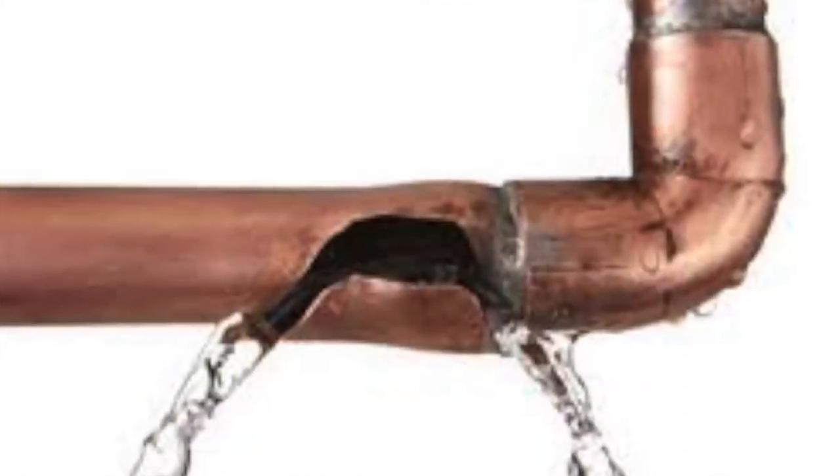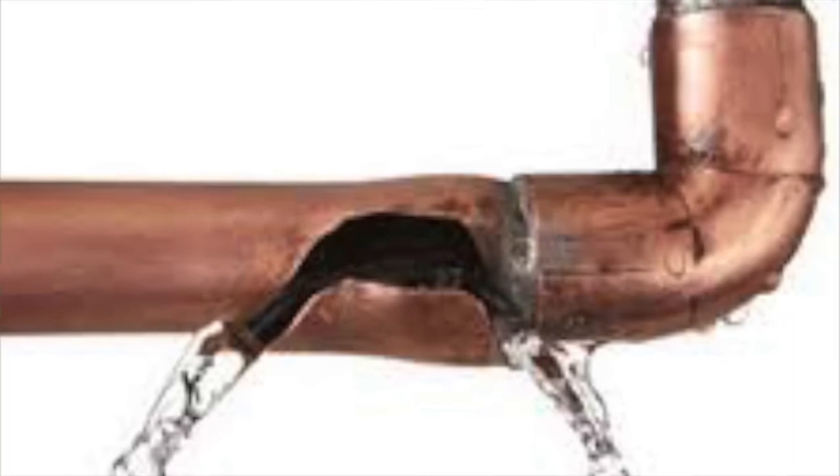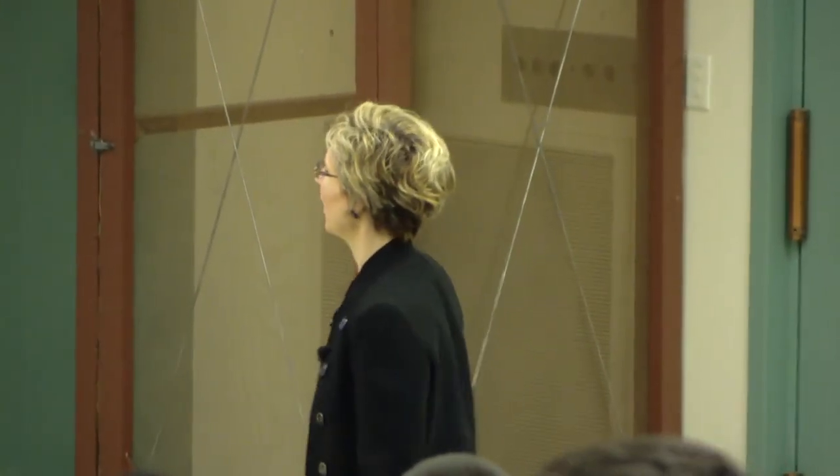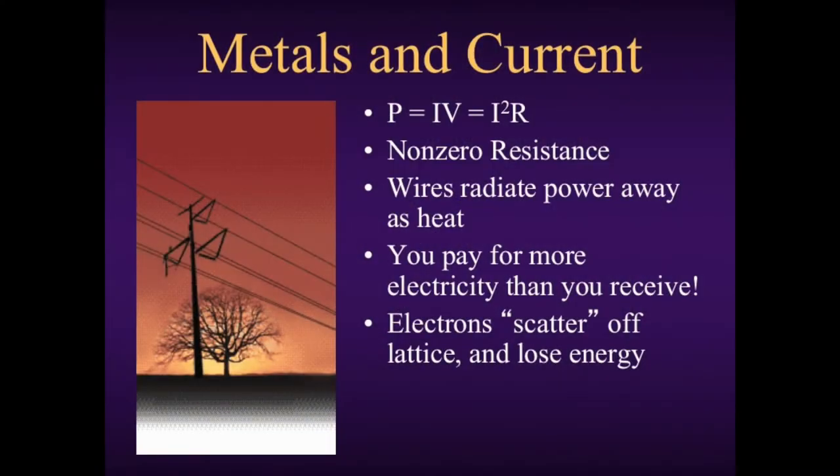Can you imagine if the water delivery system in a city did that? If your water pipes just leaked the whole way and about half the water got to you? In fact, we're putting up with it in our energy transmission lines. The physical reason it happens is that electrons scatter off of the lattice — the regular arrangement of atoms inside the solid — and so the electrons lose energy.